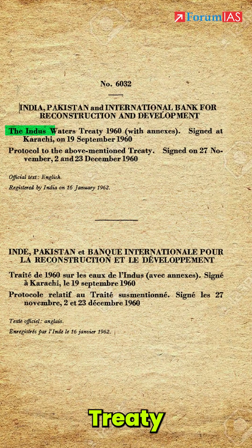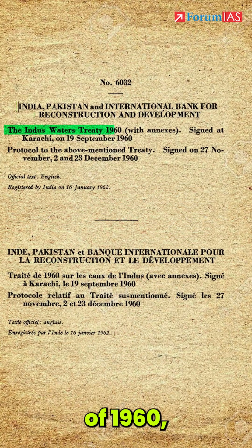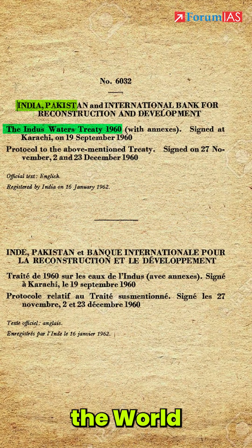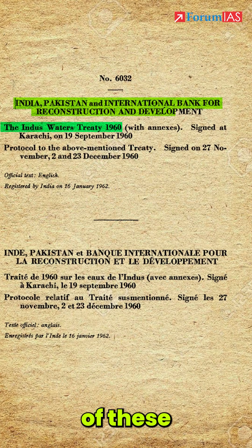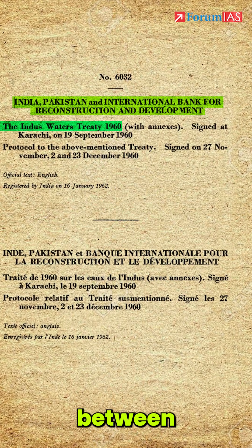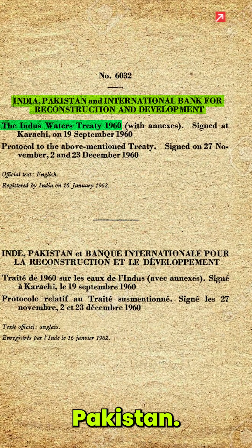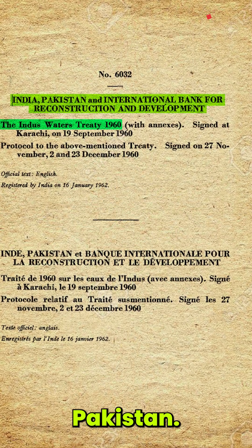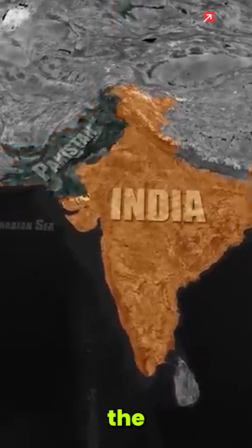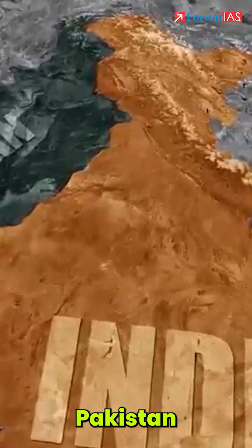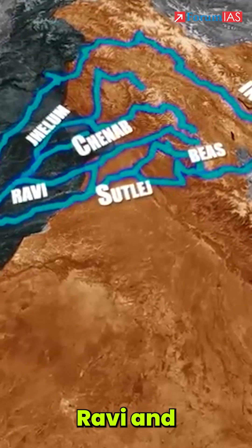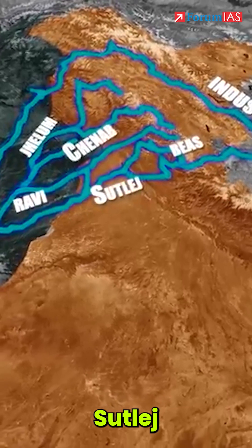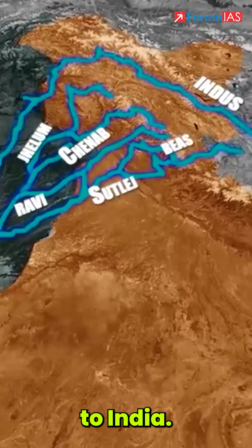The Indus Water Treaty of 1960, brokered by the World Bank, governs the sharing of these waters between India and Pakistan. It allocates the western rivers to Pakistan and the eastern rivers — Beas, Ravi, and Satalaj — to India.